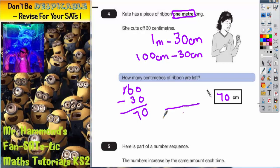We could have done that really using a number line to get from 30 to 100. We have to plus on 70. So the answer is 70 centimeters.